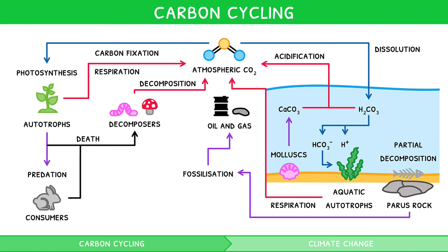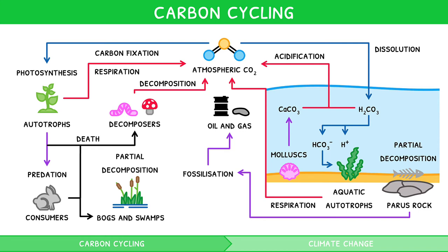A similar process can occur on land, particularly in bogs and swamps with waterlogged soil. This soil is acidic and anaerobic, so matter is only partially decomposed and accumulates to form peat. Over time, this peat is buried under sediment, where it is fossilised through compression and heating to form coal.